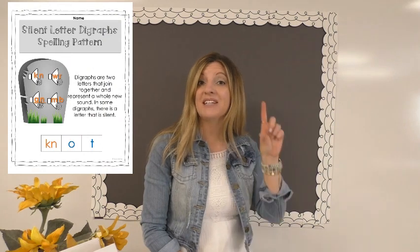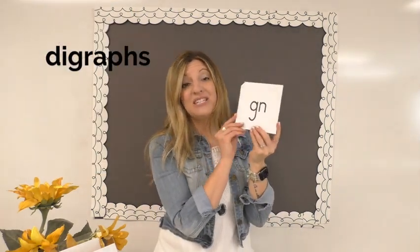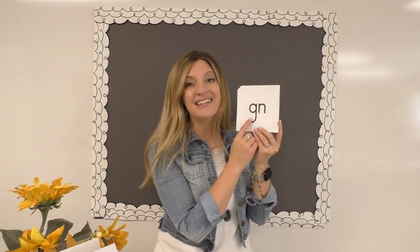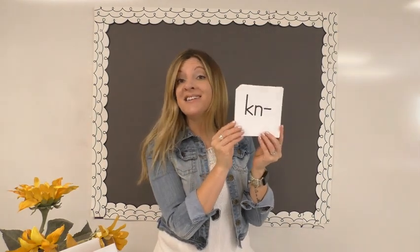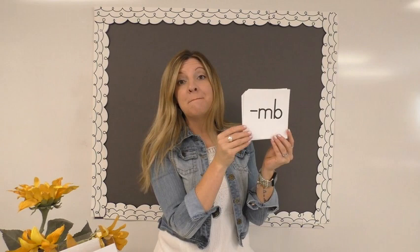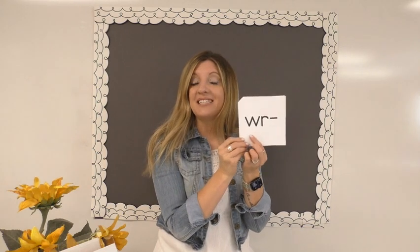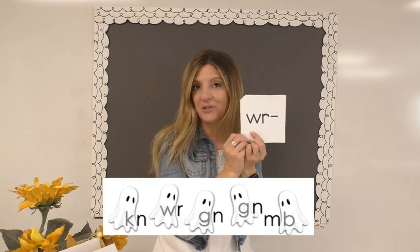Remember that a digraph is two letters that go together and make one sound, like C-H making the 'ch' sound. So these digraphs are still two letters, but notice that one of the letters is silent and its sound is not represented. The digraphs are KN, GN, WR, and MB. We sometimes call that silent letter a ghost letter because we don't actually hear it.